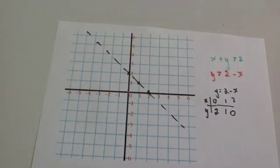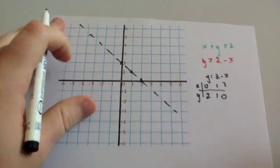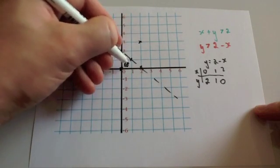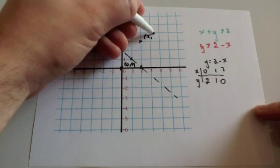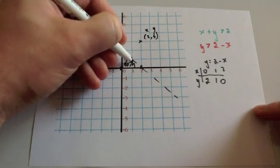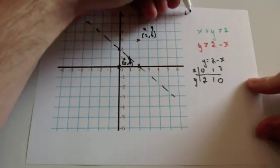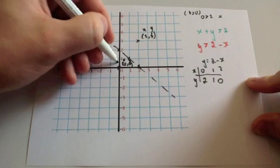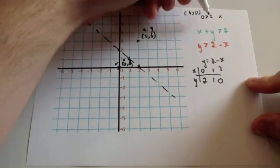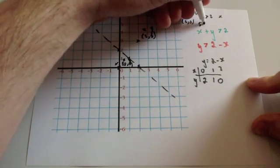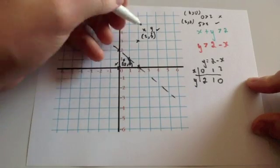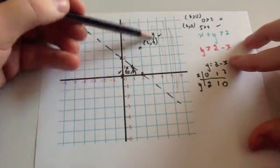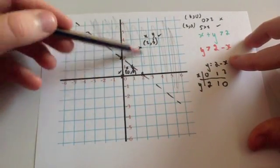Now choose two coordinates. I'm going to choose the origin (0,0) and the coordinate (2,3), and put both back into the original inequality x plus y is bigger than 2. For (0,0): 0 plus 0 equals 0, is bigger than 2 — well no, it's not, so that one doesn't work. For (2,3): 2 plus 3 is 5, is bigger than 2 — well, it is. So this one works, this one doesn't. This is the region that satisfies the inequality, so shade it in nicely — and that's it.